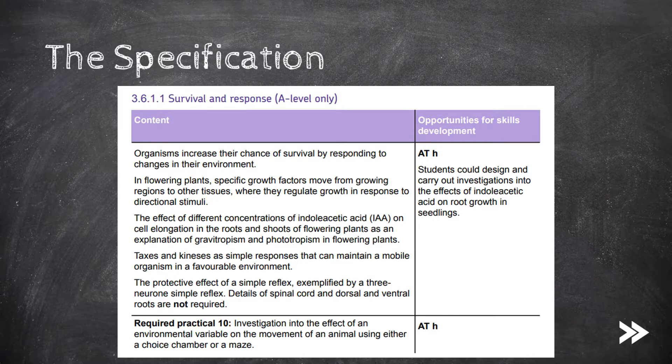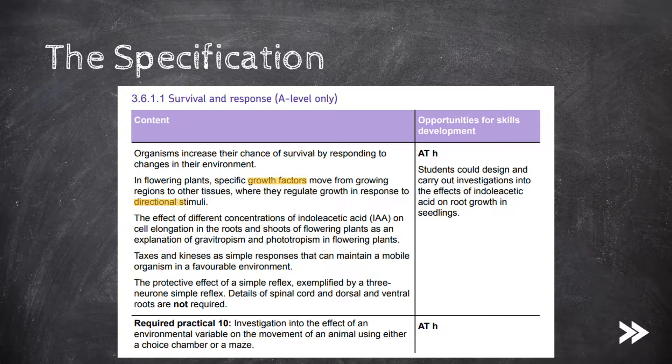For tropisms, we need to know about growth factors and how they move from growing regions to other tissues, where they regulate growth in response to directional stimuli. This brings us on to the role of indoleacetic acid, IAA, and how it affects cell elongation in the roots and shoots of flowering plants, hereby facilitating gravitropism and phototropism.